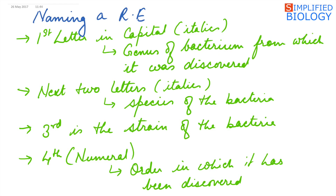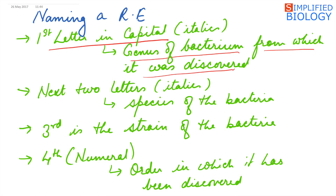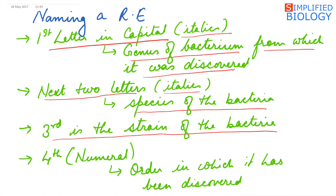Now, how is a restriction endonuclease named? The first letter in the name is written in capitals — it is the first letter of the genus of the bacterium from which it was discovered, and is written in italics. The next two letters are in lowercase, representing the first two letters of the species, also in italics. Third is the strain of the bacterium, and fourth is a numeral indicating the order in which it was discovered from that particular strain.